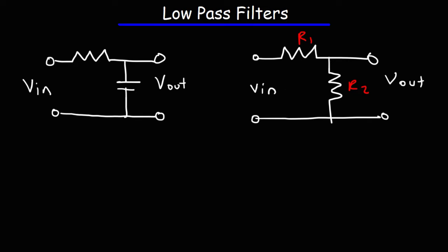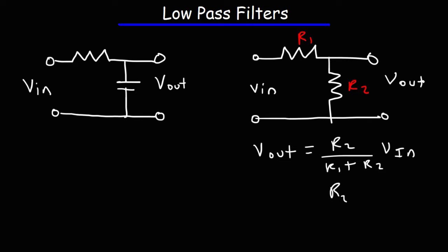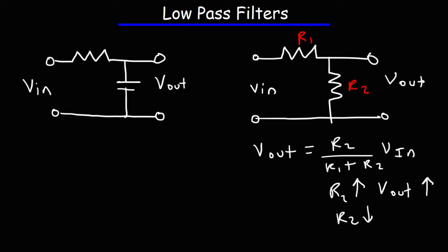If you recall, the output voltage of a voltage divider circuit is going to be R2 over R1 plus R2, times the input voltage. As R2 increases in value, the output voltage will increase if you keep R1 the same, since R2 is in the numerator. So R2 and the output voltage are proportional to each other. If you decrease R2, the output voltage will decrease.